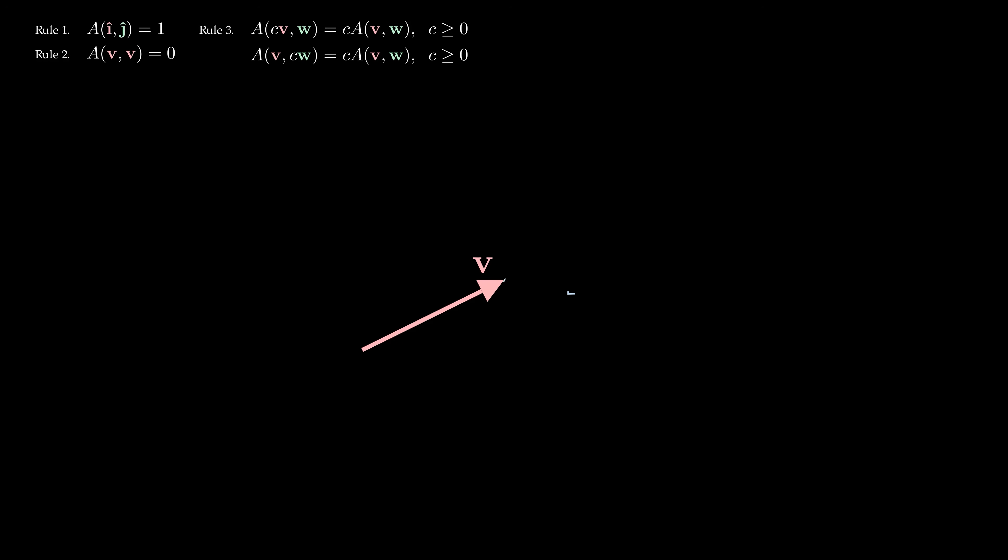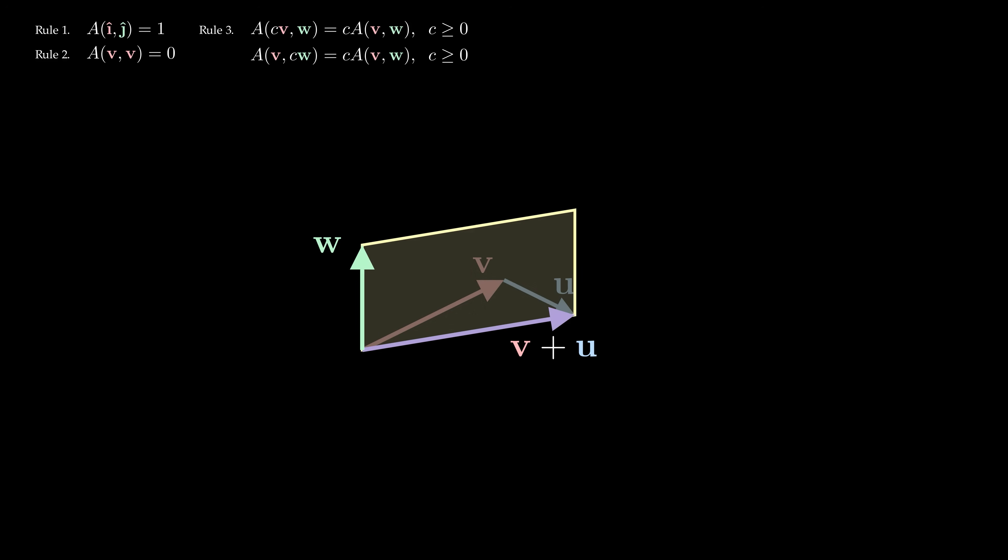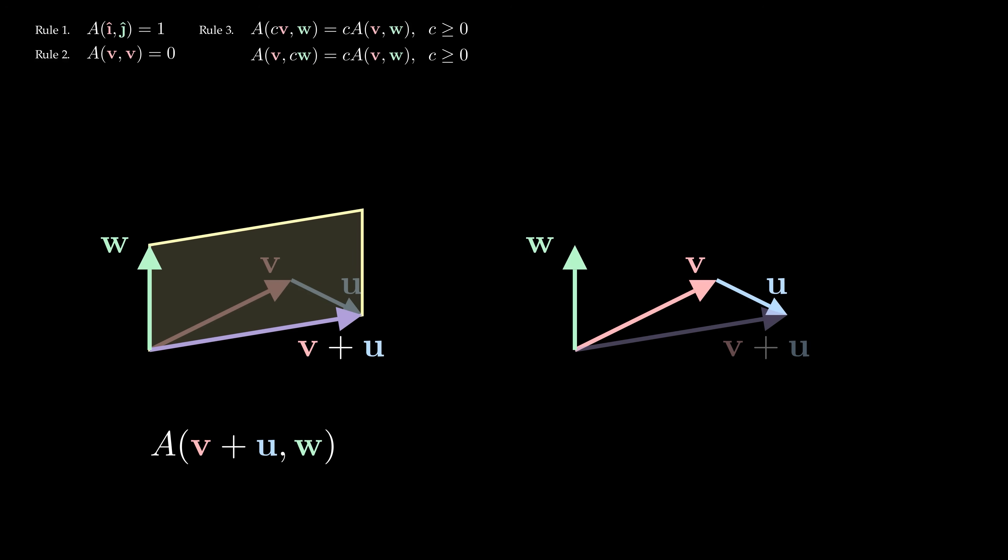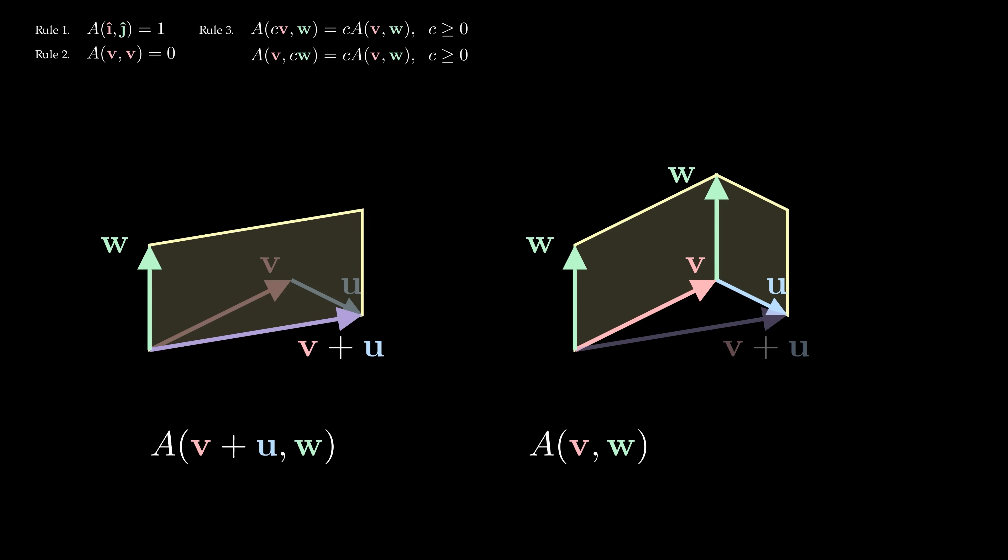Finally, what happens to the area when we add two vectors together? Say the vector v plus u forms a parallelogram with w. How does this parallelogram relate to the parallelograms formed by v and w, or by u and w?